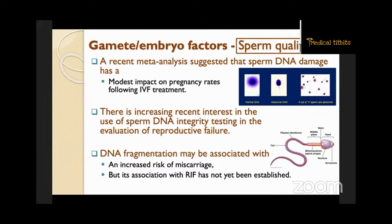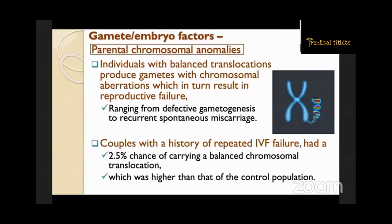When it comes to parental chromosomal anomalies, individuals with balanced translocations produce gametes with chromosomal aberrations, which in turn result in reproductive failure ranging from defective gametogenesis to recurrent spontaneous miscarriage. Couples with a history of repeated IVF failure had a 2.5% chance of carrying a balanced chromosomal translocation, which was higher than that of the control population.